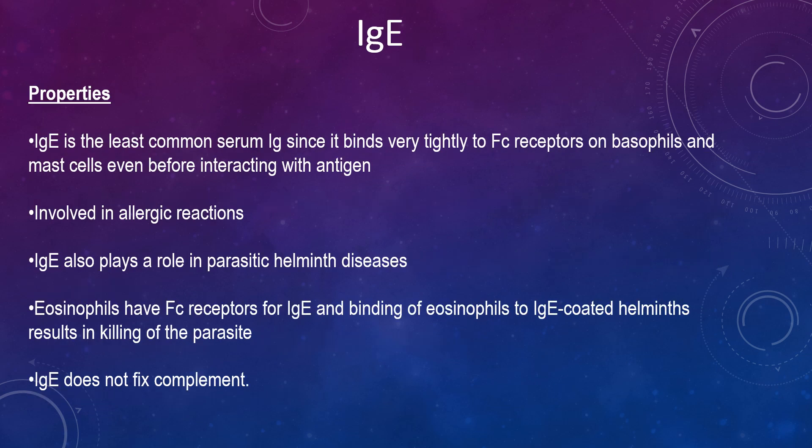IgE exists as a monomer and has an extra domain in the constant region. It is the least common serum immunoglobulin since it binds very tightly to Fc receptors on basophils and mast cells even before interacting with antigen. It is involved in allergic reactions — as a consequence of binding basophils and mast cells, IgE triggers the release of various pharmacological mediators that result in allergic symptoms. It also plays a role in parasitic helminth diseases; IgE levels in parasitic diseases are increased, so measuring serum IgE levels is helpful in diagnosing parasitic infections. Eosinophils have Fc receptors for IgE, and binding of eosinophils to IgE-coated helminths results in killing the parasite. IgE does not fix complement.